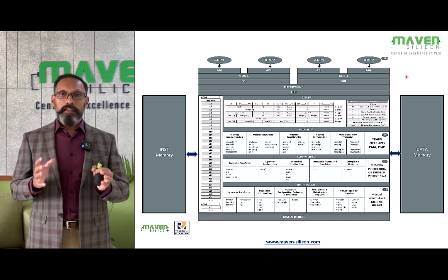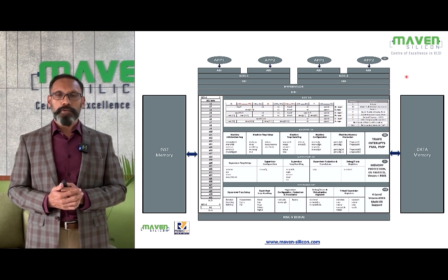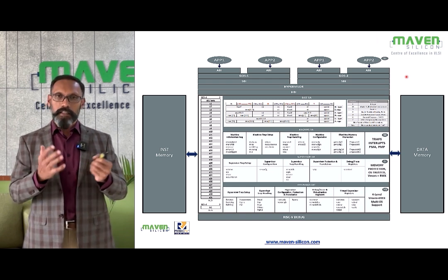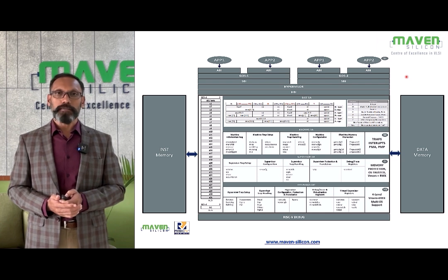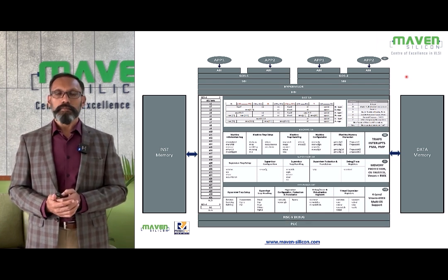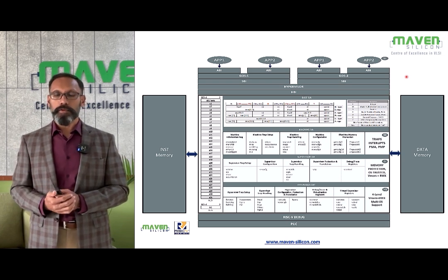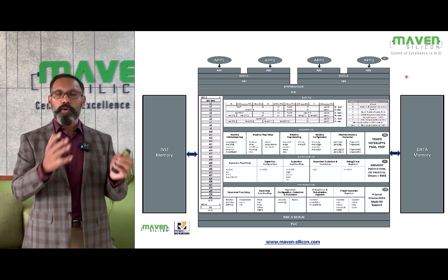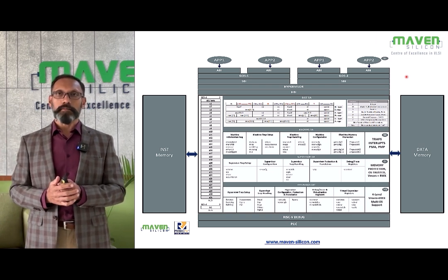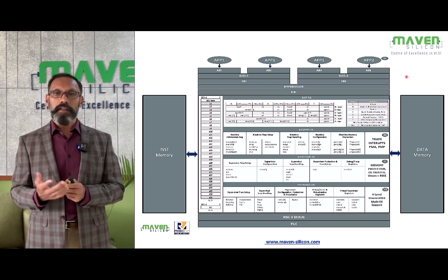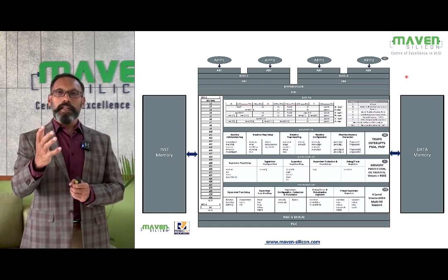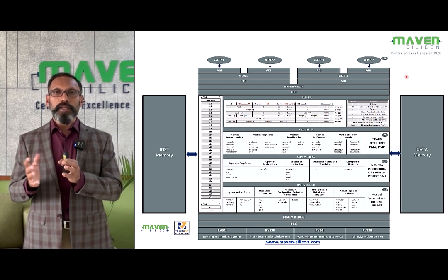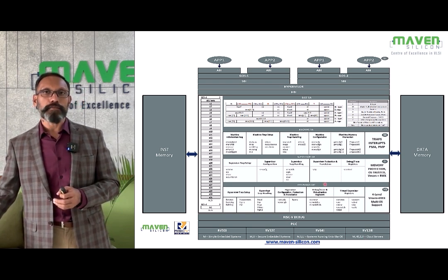Everyone needs to understand the debug architecture. Embedded systems programmers need to understand how to debug their software and deal with off-chip debugging. Verification engineers also need to understand the debug architecture — there are many CSRs defined as part of it, and debug is the highest privilege mode. Other important topics include PLIC — platform level interrupt controller — handling timer interrupts, software interrupts, and other hardware system interrupts, and how to implement simple, secure, Unix-like OS, or cloud server systems using RISC-V ISA.